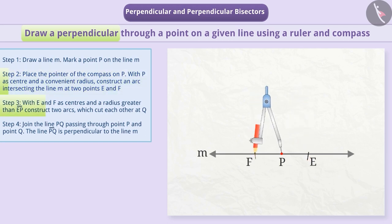Step 3: Next, we will place the pointed side of the compass on E and construct an arc with a radius greater than EP. Without changing the distance taken in the compass, we will draw another arc from F which cuts the arc formed from E at point Q.